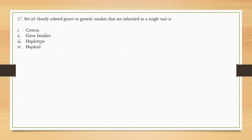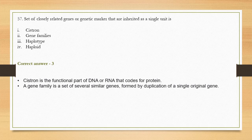Question number 57: A set of closely related genes or genetic markers that are inherited as a single unit is — options are cistron, gene families, haplotype, and haploid. The correct answer is option 3, haplotype. A haplotype is a set of closely related genes inherited as a single unit from parents to offspring. A cistron is a functional part of DNA that codes for proteins. A gene family is a set of similar genes formed by the duplication of a single original gene.